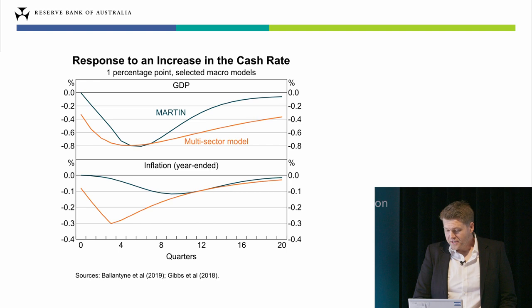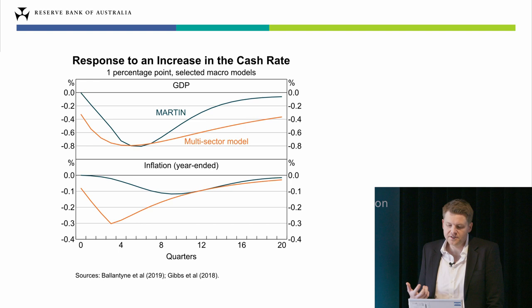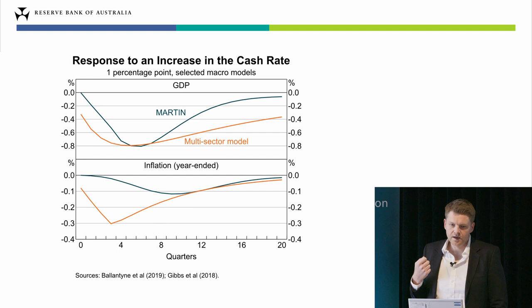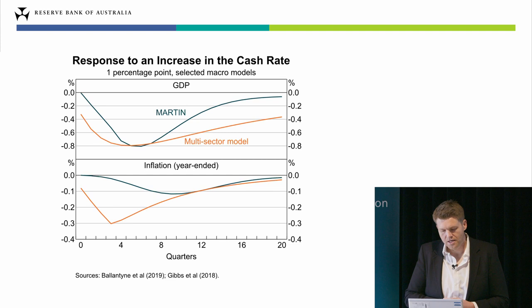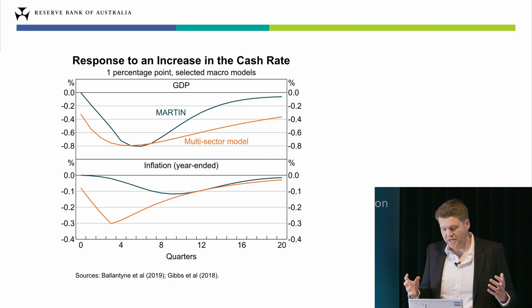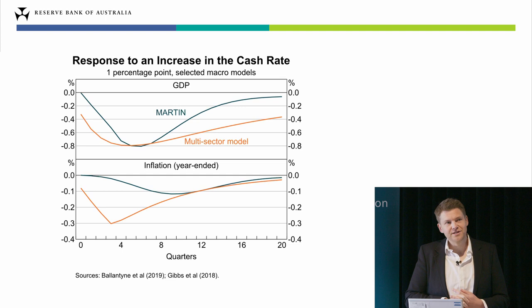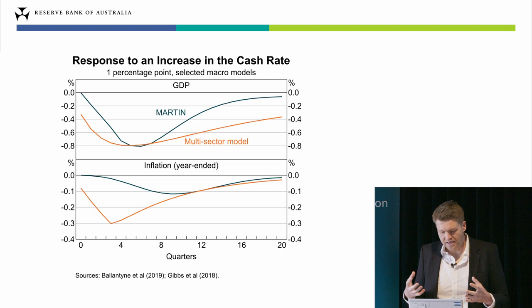Another interesting thing you can see from this graph is that the two models provide a somewhat different picture of how strongly monetary policy affects inflation and how quickly those effects come through, simply because they make different assumptions about how the economy works. This speaks to an important point: when assessing how monetary policy affects activity and inflation, we really need to look at a range of different models and data sources. This is a very active area of research at the RBA, from building large-scale models to using highly detailed data on individual households, businesses, and loans.